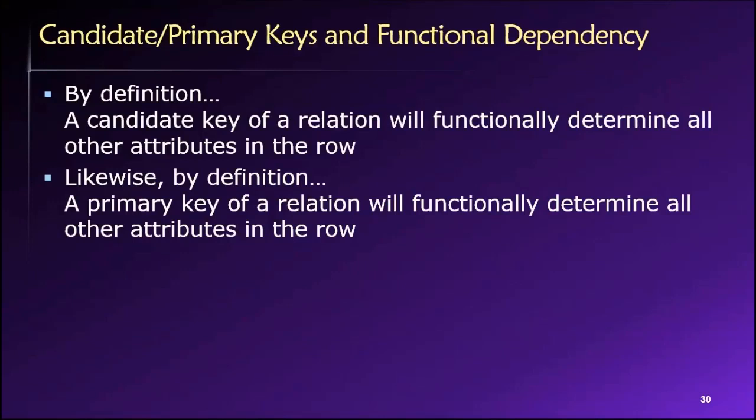Now, with these ideas in mind, we can revisit briefly this concept of candidate and primary keys in the context of functional dependencies. By definition, any candidate key that we have in a table, it can only be a candidate key if it functionally determines all other attributes in the row. So what that means is that a candidate key is only a candidate key because if we know the value of the candidate key, we can identify the values of all other attributes for that row.